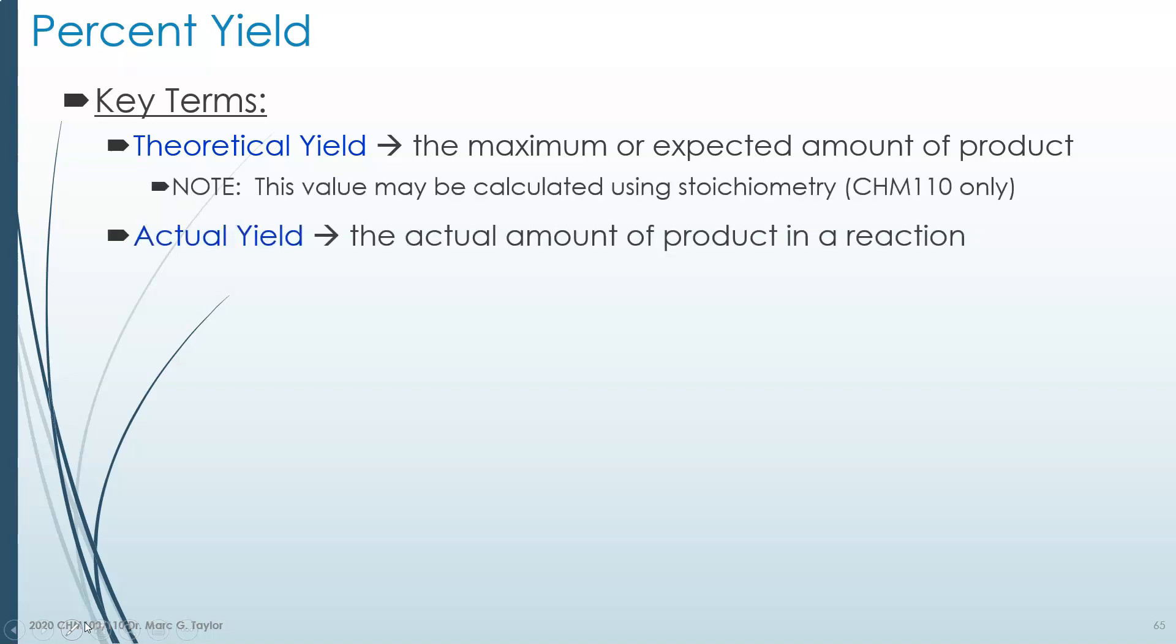The actual yield is what you really got during the chemical reaction. So you do the chemical reaction, you calculate how much you expect to get, and then you measure how much you actually got. That's your actual yield, also in grams typically, or maybe liters if it's a gas.